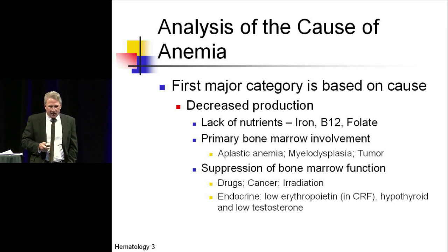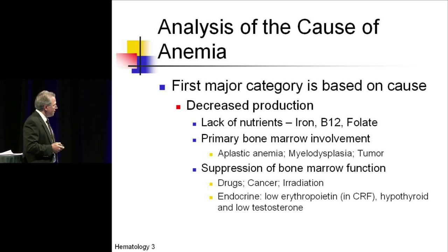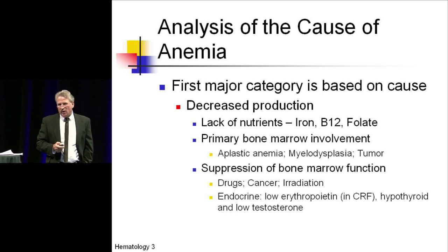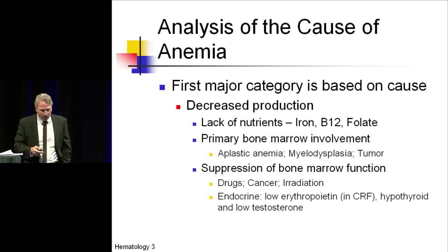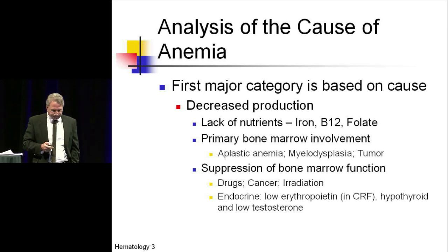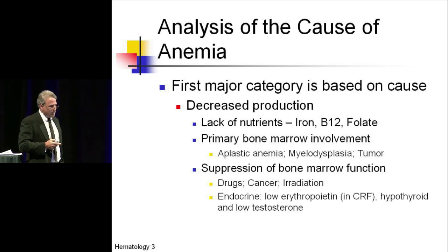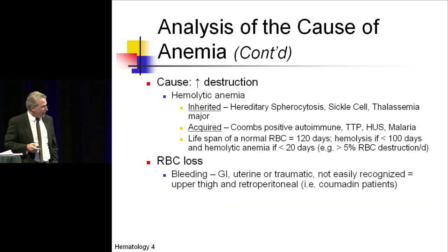Anemia can be due to a lack of nutrients — iron deficiency, B12, folate, and the like. It can also be a manifestation of either a primary or an extrinsic effect on the bone marrow. Primary bone marrow involvement includes aplastic anemia and myelodysplasia. Extrinsic hormonal causes include erythropoietin, which is typically low in chronic renal failure, thyroid, and testosterone.